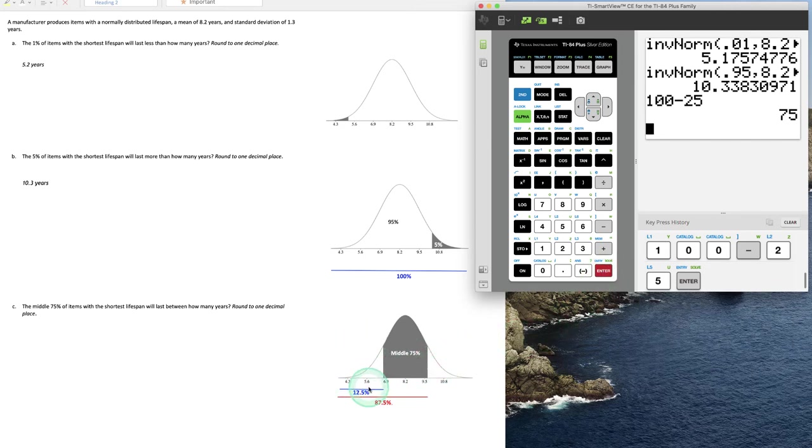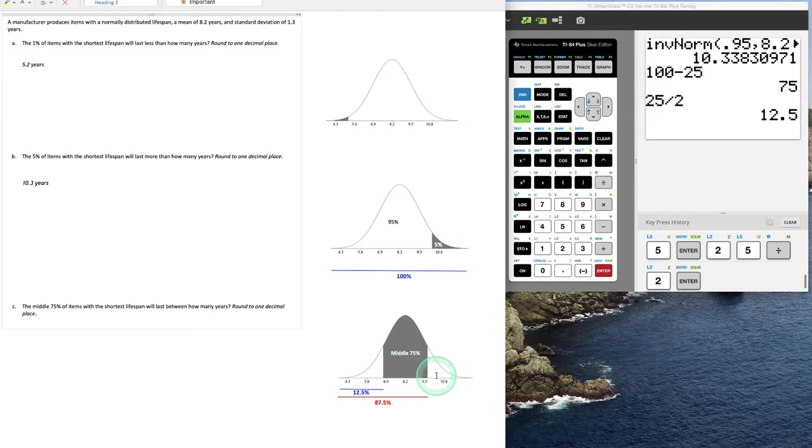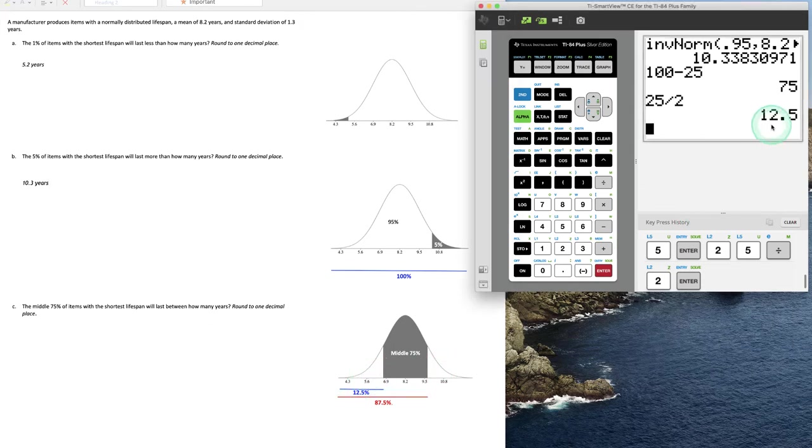And since the normal distribution is symmetric, we will divide that by 2. So notice here, if I subtract 75 from 100, we know that 25% is left over. But it's split evenly into each of these tails in white on the left and right side. That means there's 12.5% in these tails, the white tails here.